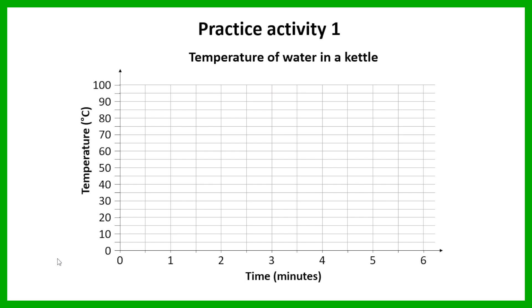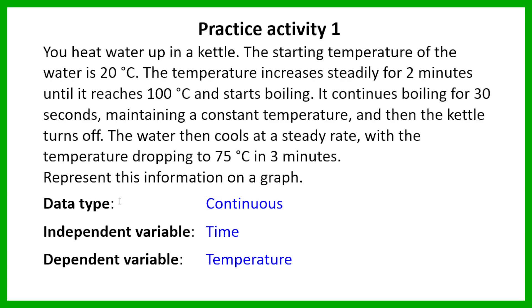Then you had to go and plot the points based on the information given. The starting temperature is 20 degrees Celsius, so at time zero the temperature should be 20 degrees Celsius. Then it increases for two minutes to 100 degrees Celsius, so at the two-minute mark the temperature should be 100 degrees Celsius. It then boils at a constant temperature for 30 seconds. The kettle turns off, and the water cools over three minutes, dropping to 75 degrees Celsius.